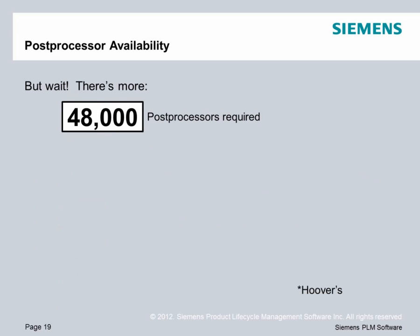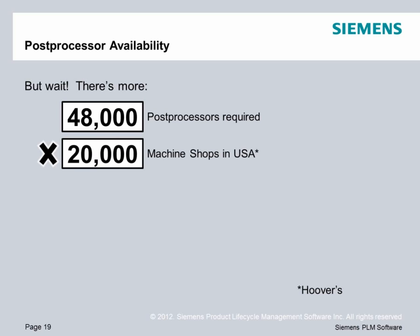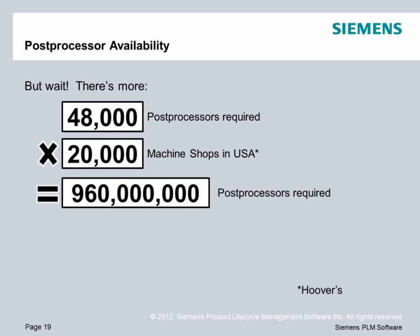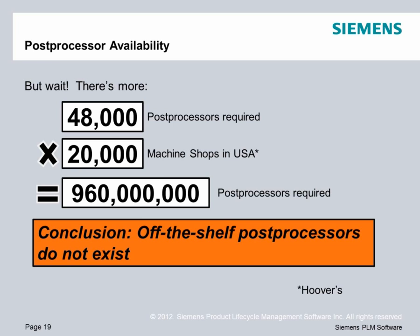But wait, there's more. Of those 48,000 post-processors required, your shop has unique requirements and unique ways of doing business that no other shop has. I've worked in the post-processor business for quite some time, and I've never been able to take a post that worked perfectly well in one shop, deliver it to another shop, and have it work perfectly well there — they always want changes or modifications. Every shop is unique, and one of the ways you express that uniqueness is through the code that you use at the machine tool. Hoover's estimates there are 20,000 machine shops in the United States — 48,000 times 20,000 equals 960 million post-processors. So when somebody says they have an off-the-shelf post-processor for every machine, I'm not so sure that's actually true.